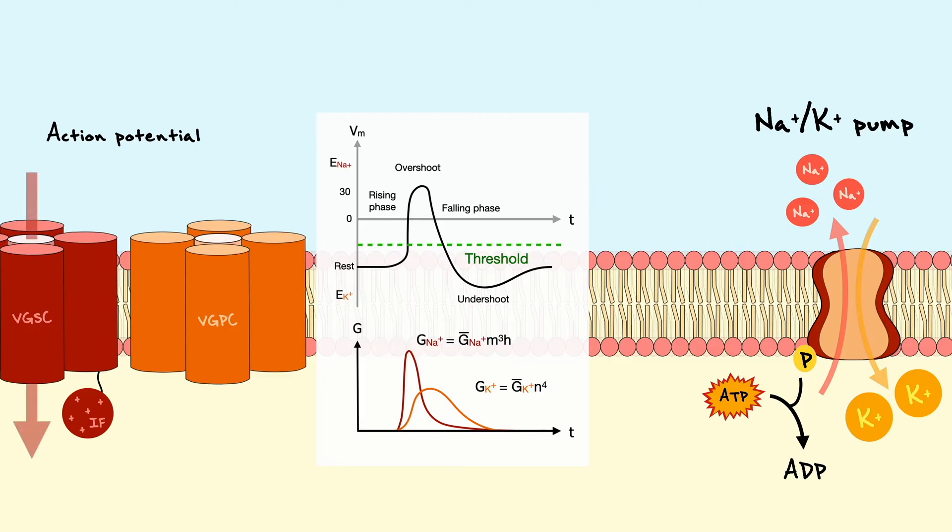When the cell is initially depolarized, the inward sodium current is balanced by an increase in two outward currents from potassium and the leaked channels because their driving force increases as the membrane potential gets more positive.